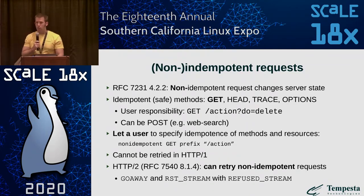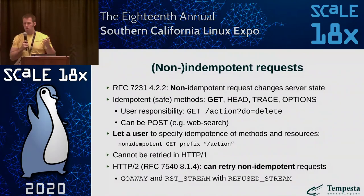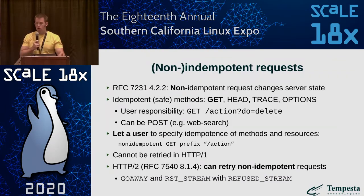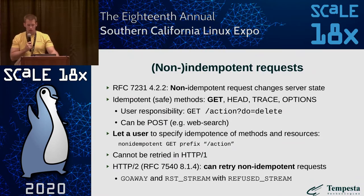Speaking about pipelining, we have to speak about non-idempotent requests. Non-idempotent requests are requests which change the server state. There are safe requests like GET, TRACE, or OPTIONS which never change the server state — even if you request dynamic content, the server generates the same content and the state doesn't change. POST is usually defined as a non-idempotent method; however, it can be idempotent — for example, if you use POST just to deliver more attributes to the server.